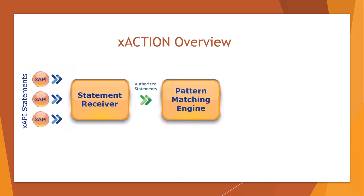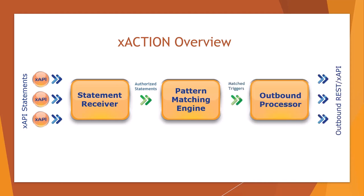The LRS forwards statements to XAction. We set up two rules in XAction: one to watch for a passed statement checking for a minimum score of 80%, and the second rule watched for the completion statement for the course. We also set up a trigger action to call the Internet of Things outlet API and turn it on. Once both rules were met for the trigger, XAction made the outbound call and the coffee maker turned on.